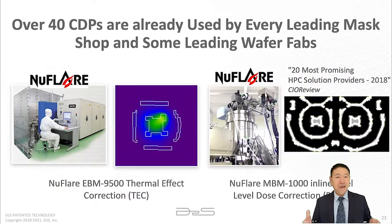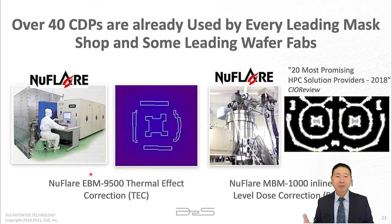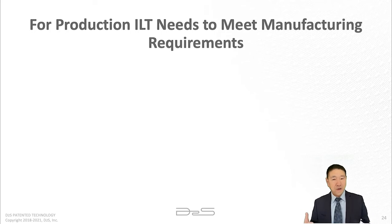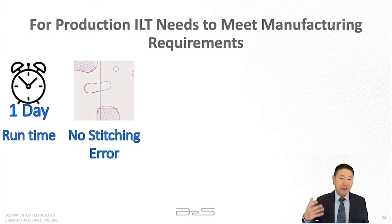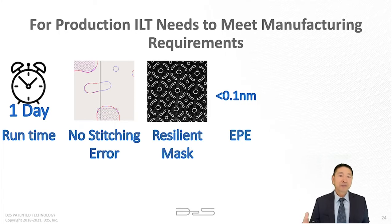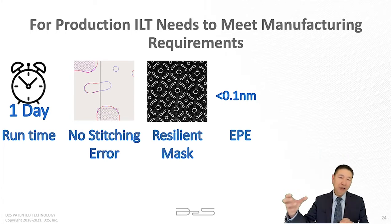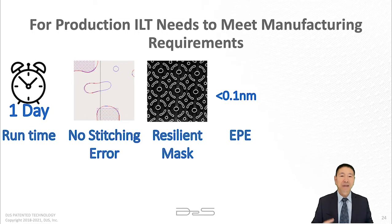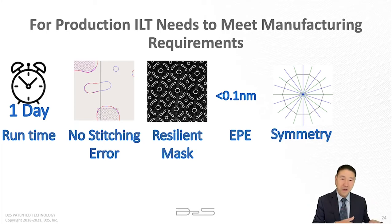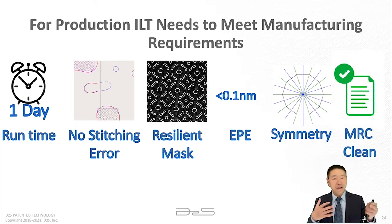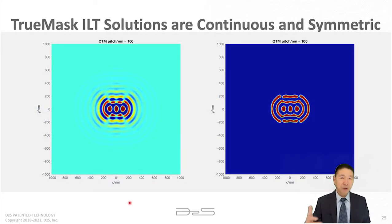Production ILT has many requirements from wafer fabs: runtime must be fast — one to a couple of days; no stitching errors; mask resilience; meeting EPE requirements so it can replace the entire OPC flow; symmetry — if the original pattern is symmetric, the solution must be symmetric; and MRC cleanliness, meeting all mask rules.